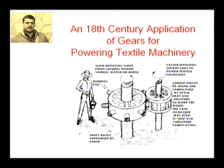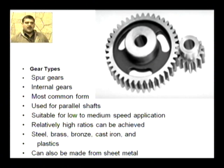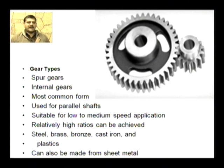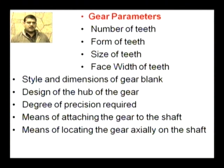Gear types: Spur gear is the most common form, used for parallel shafts. It is suitable for low to medium speed applications, and relatively high speed ratios can be achieved. Materials used include steel, brass, bronze, cast iron, and plastics; spur gears can also be made from sheet metal.